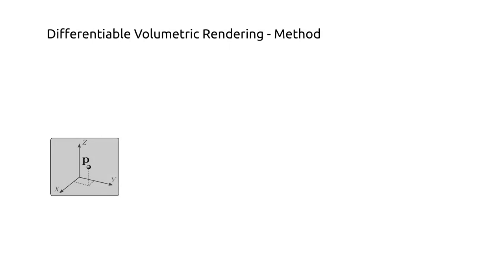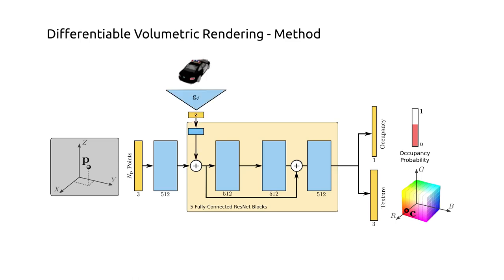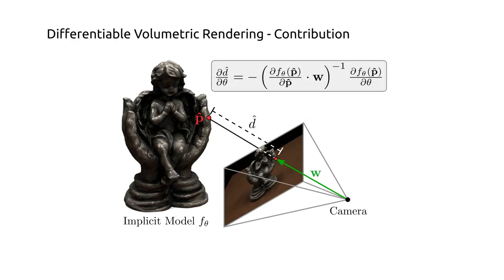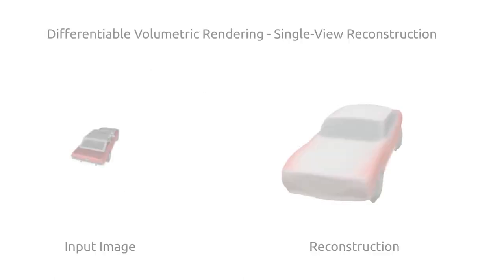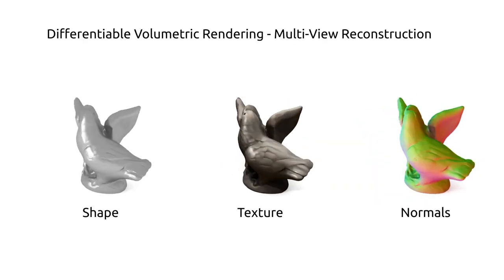More specifically, we can take any point in 3D space and pass this through our fully connected neural network to predict an occupancy probability as well as an RGB color value. For single-view reconstruction, we can further use an encoder network to condition our model on the input image. Our key contribution is to analytically derive a memory-efficient solution to learning implicit representations from only multi-view images as supervision. We can apply our method to both single-view reconstruction as well as multi-view reconstruction.